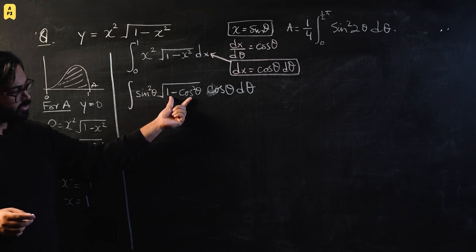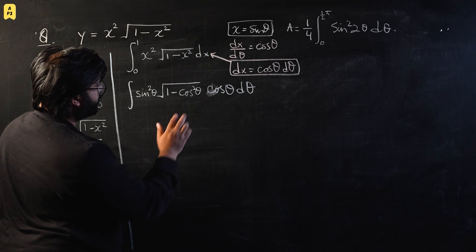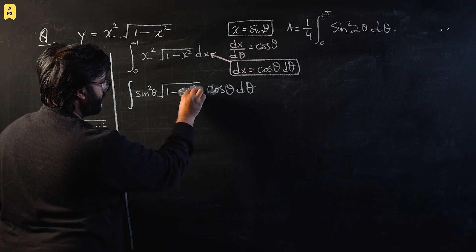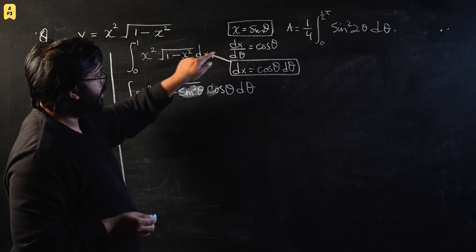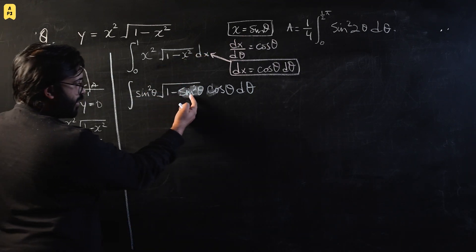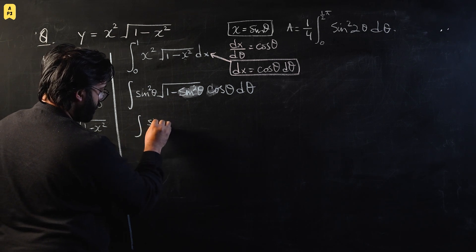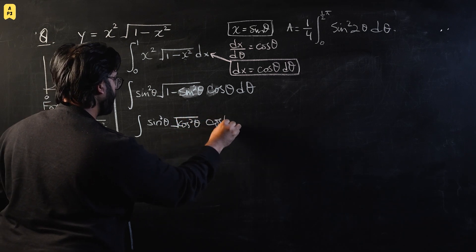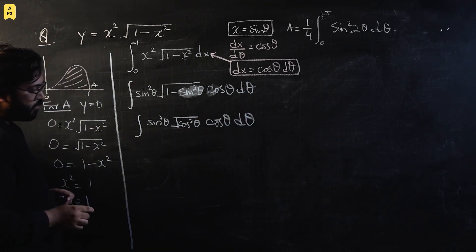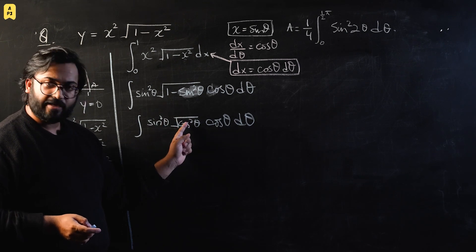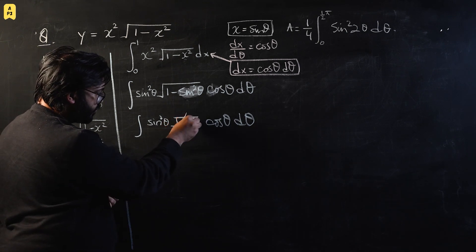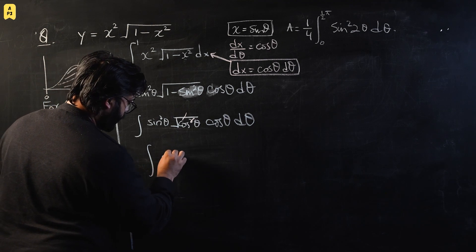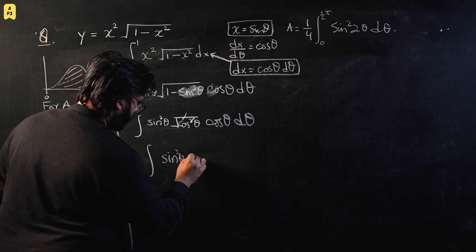One minus sine squared theta equals cos squared theta, so the square root of (one minus sine squared theta) equals the square root of cos squared theta, which is cos theta. Multiplying by dx which is cos theta dθ, we get cos theta times cos theta equals cos squared theta. So the integral becomes the integral of sine squared theta times cos squared theta dθ.